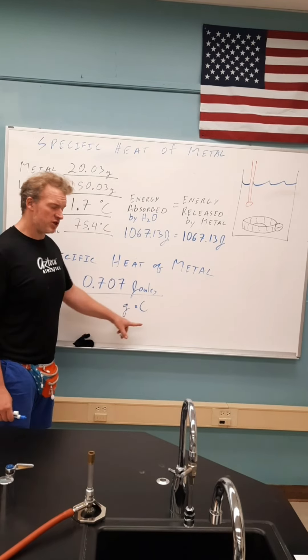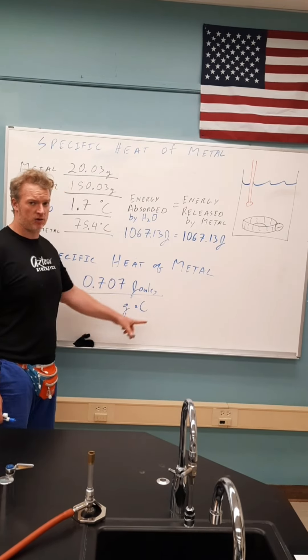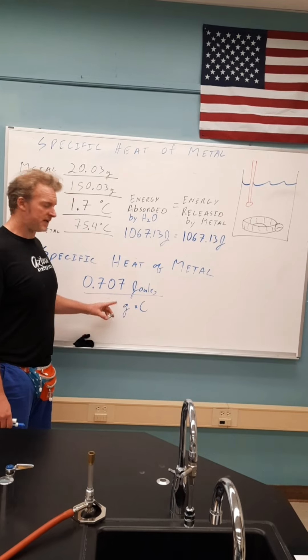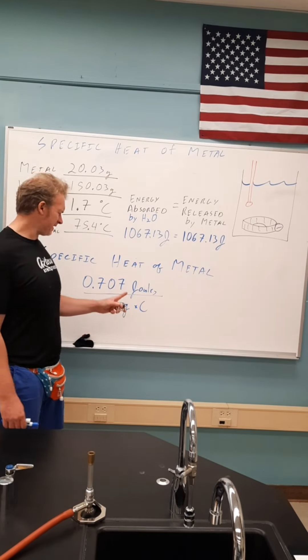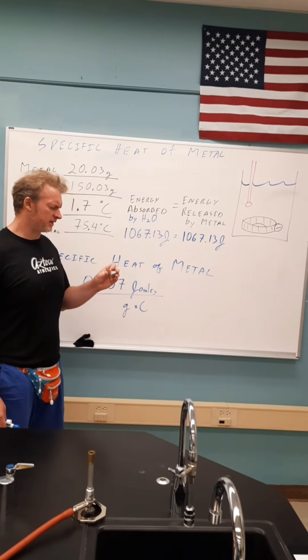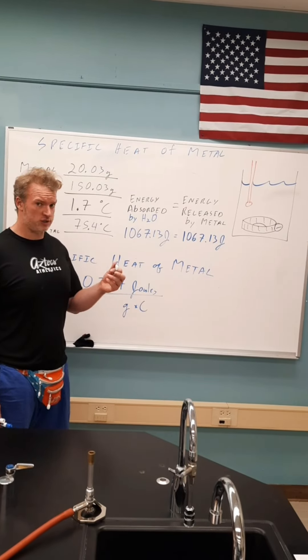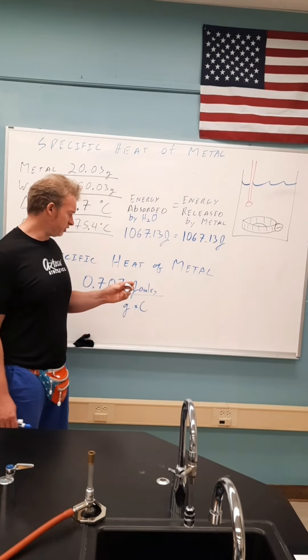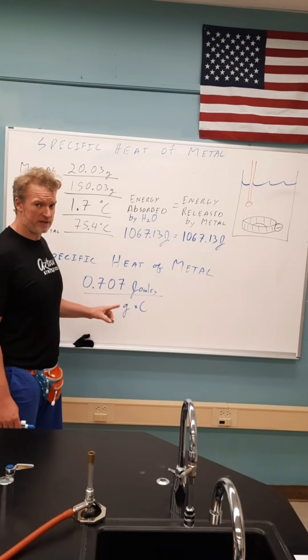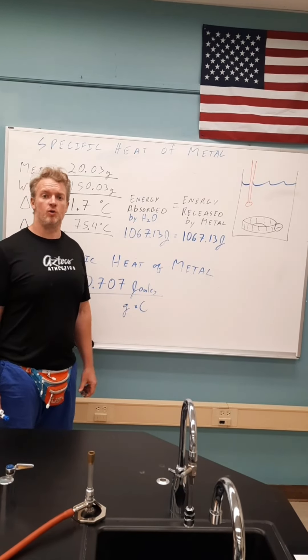Remember that these are the units for specific heat, like this amalgam here. When we Google a table of this, glass, silica, granite comes up exactly at 0.7, but this isn't clearly made of glass, silica and granite. This looks like aluminum and feels like aluminum and aluminum is 0.9, so very close. I hope this helps.